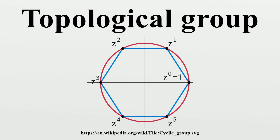More generally yet, the additive groups of all topological vector spaces, such as Banach spaces or Hilbert spaces, are topological groups. The above examples are all abelian.